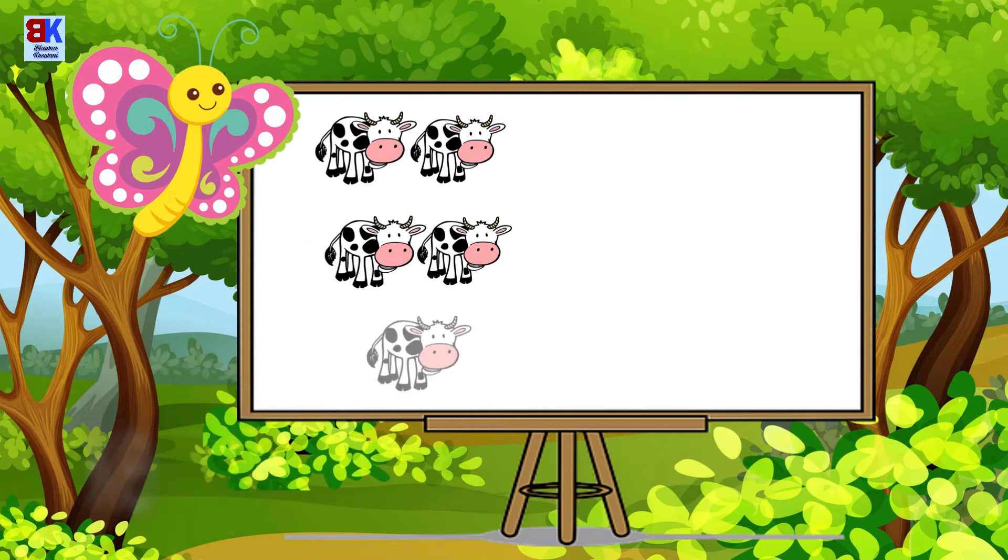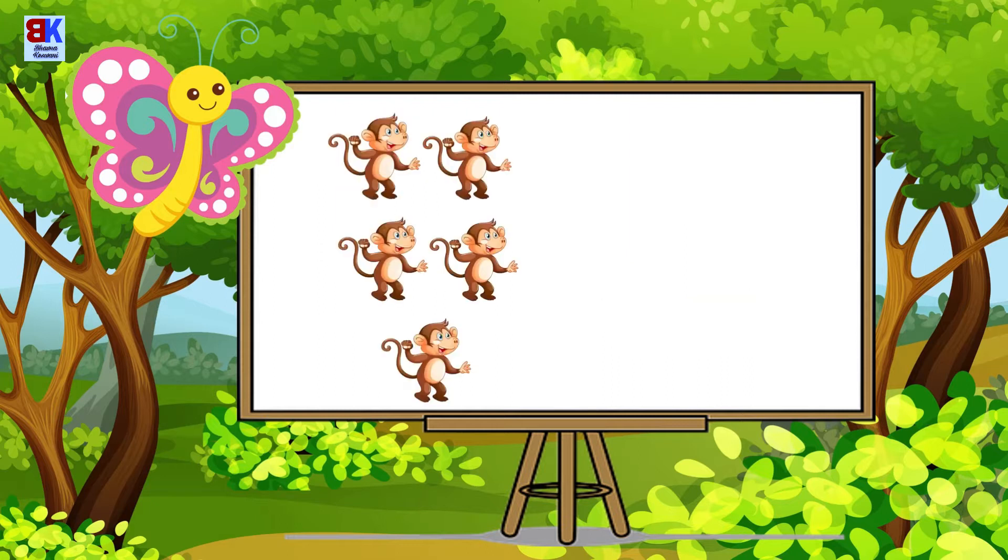How many cows are there? One, two, three, four, and five. We have five cows. Count the number of monkeys: one, two, three, four, and five. We have five monkeys.